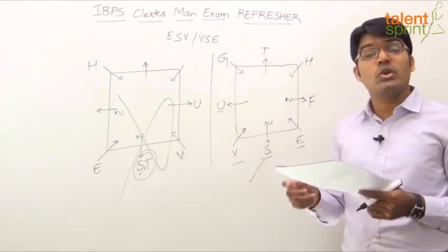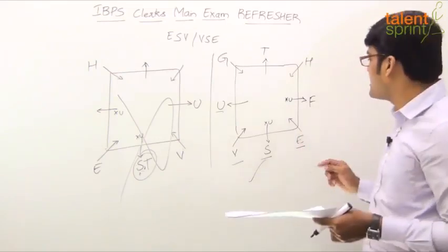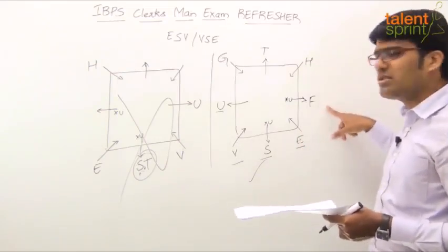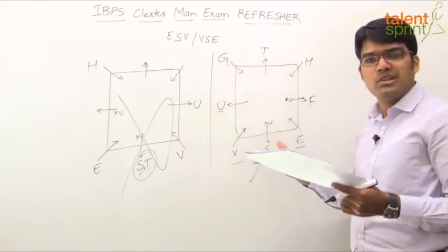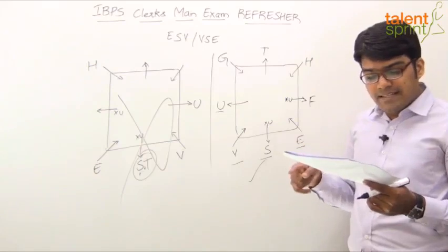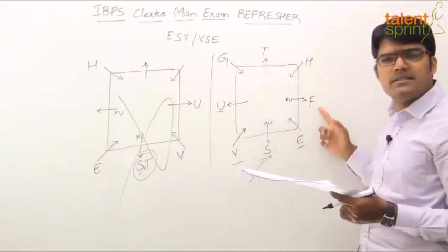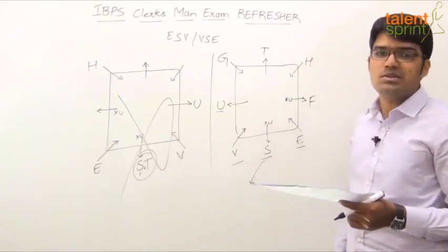Which of the following is true regarding F? Only 3 people sit between F and H. Only 3 people sit between F and H? No. This way, 0 people. This way, 6. That is wrong. F sits in the middle of one of the sides. Yes. F sits in the middle of one of the sides. Correct. So, option 2 is the answer.